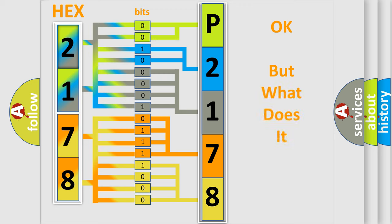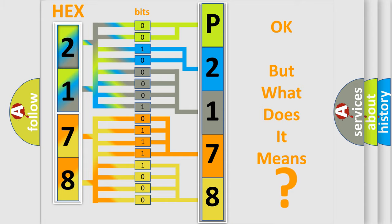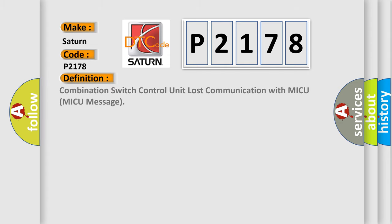The number itself does not make sense if we cannot assign information about what it actually expresses. So, what does the diagnostic trouble code P2178 interpret specifically for SAT and car manufacturers? The basic definition is: combination switch control unit lost communication with MICU message.